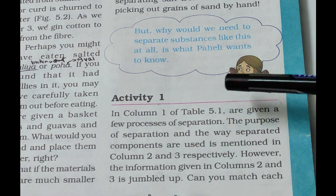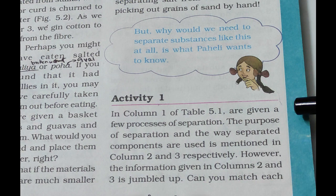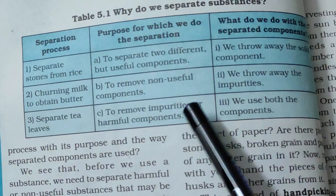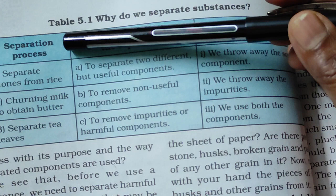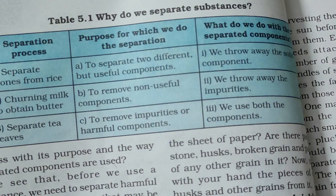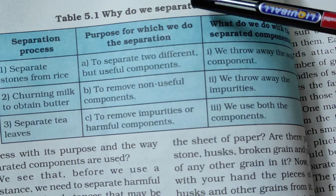In activity one, table 5.1 has three columns: the separation process, the purpose of separation, and the way separated components are used. The information in columns 2 and 3 is jumbled up. You need to match each process with its purpose and how the separated components are used.